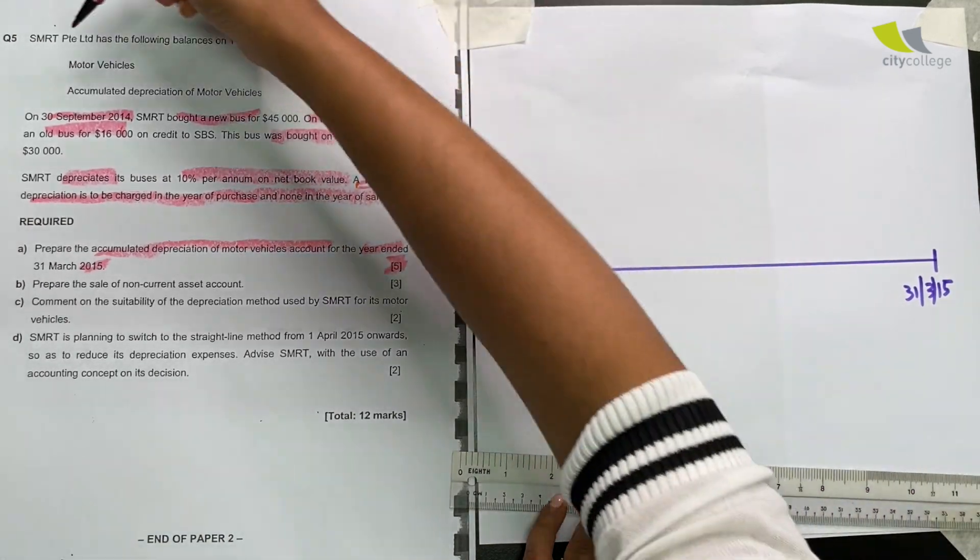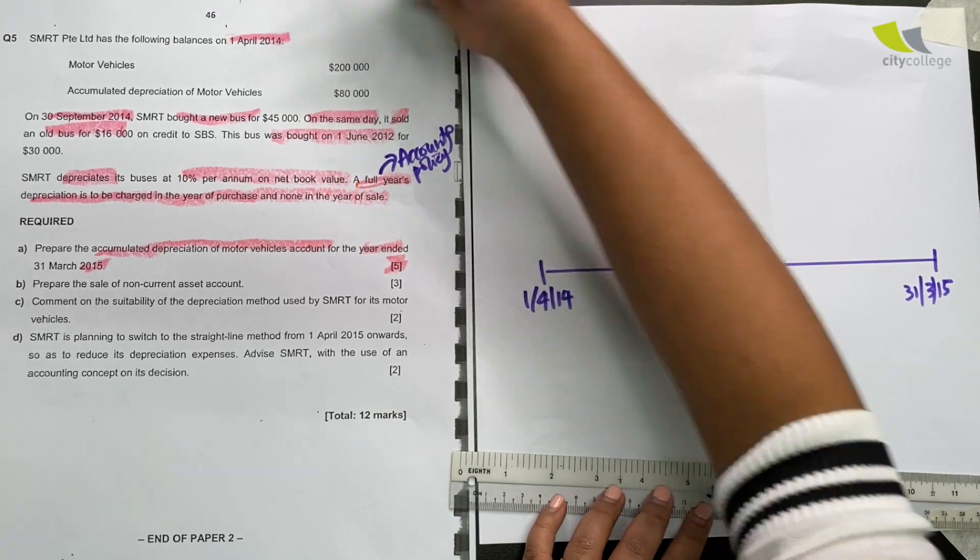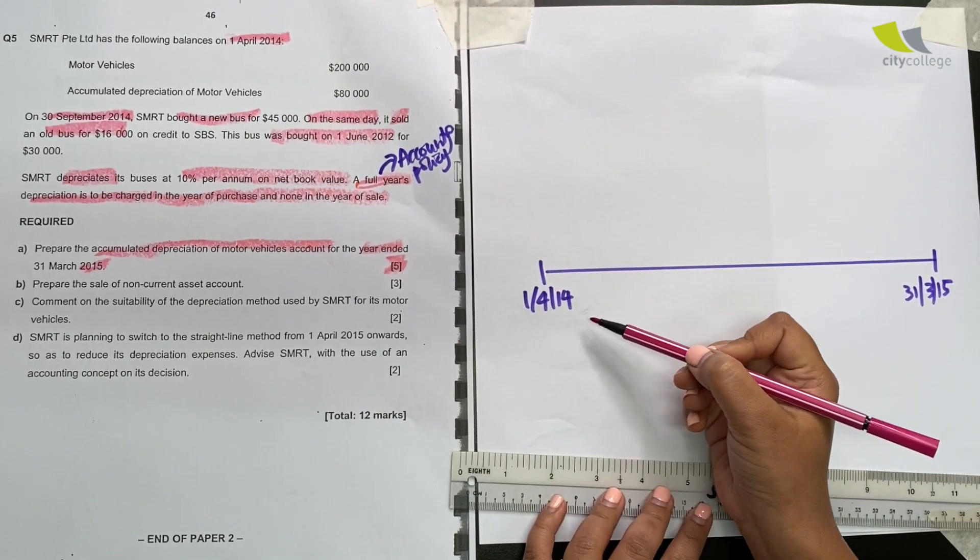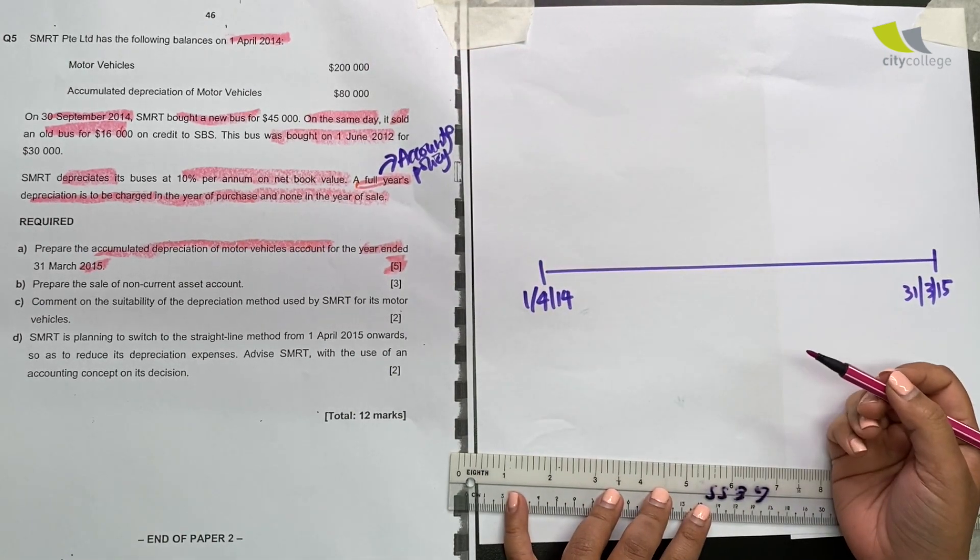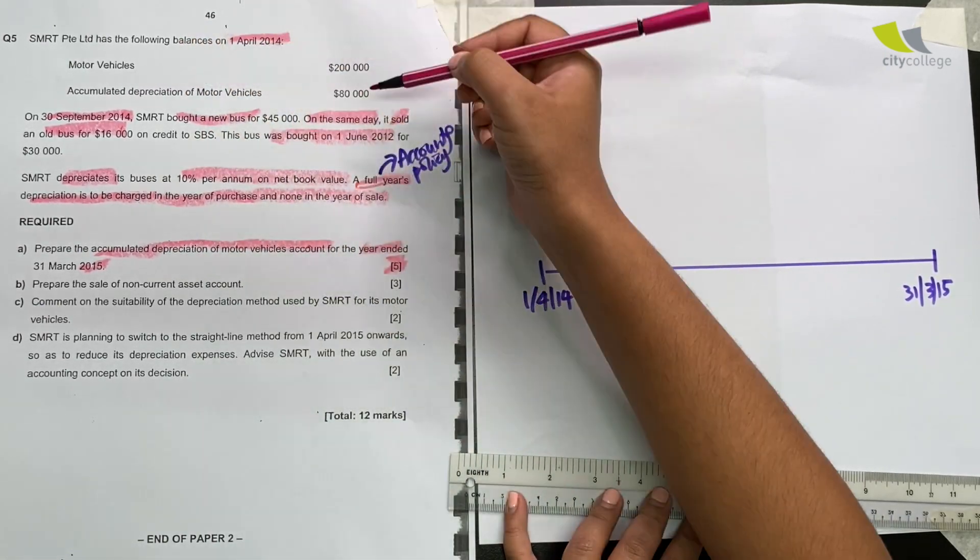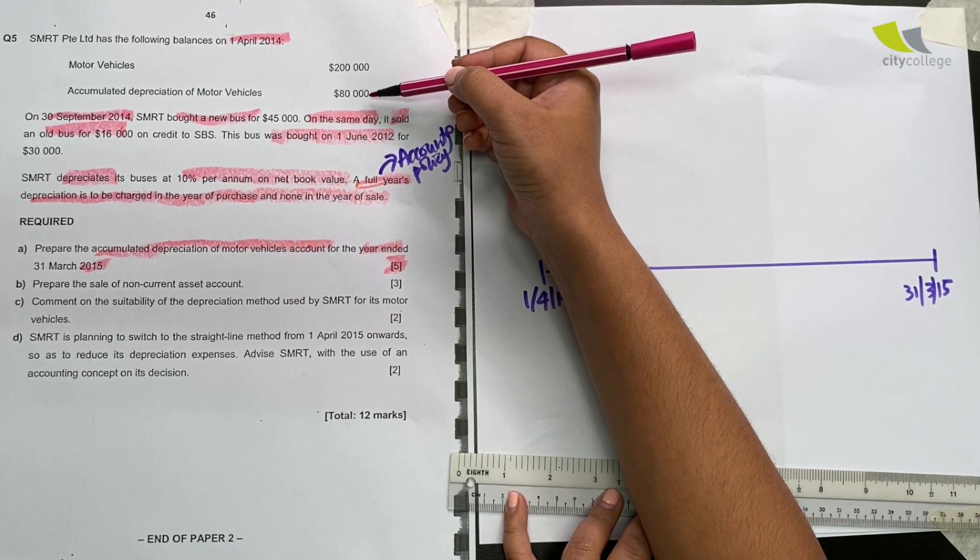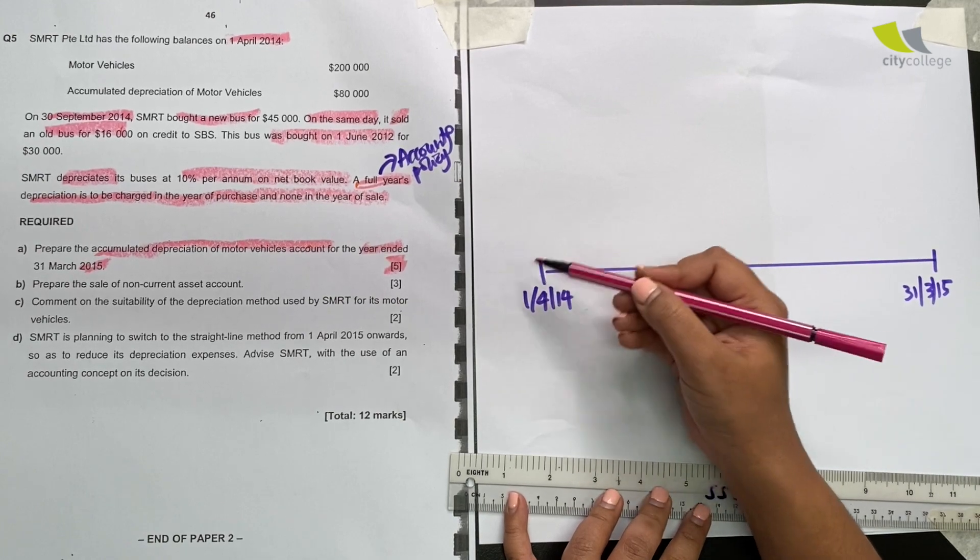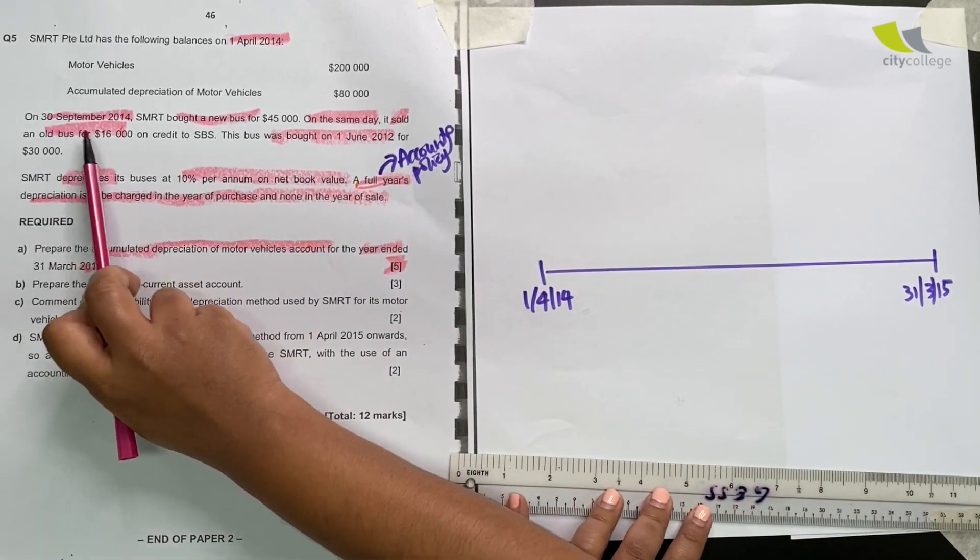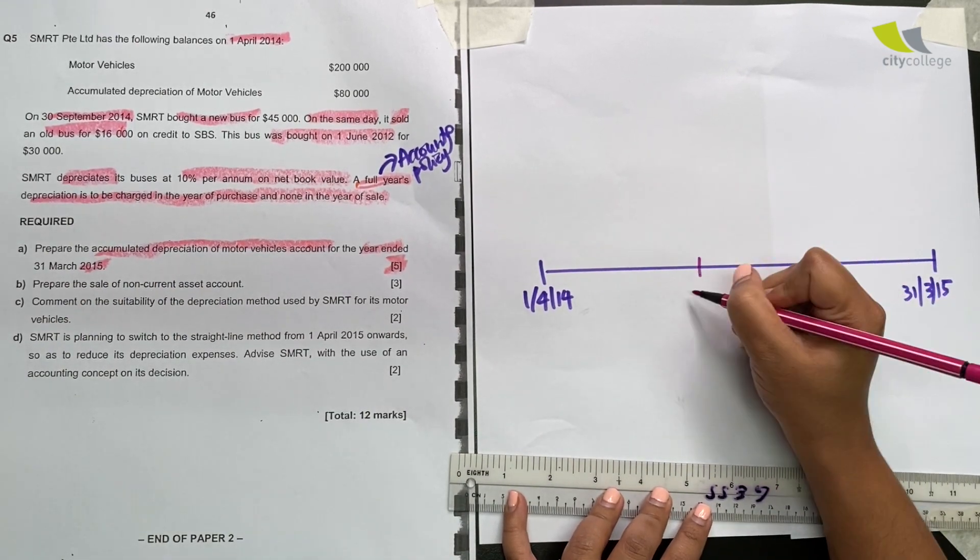The question says that the business has the following balances on 1st April 14. So this is 1st April 14. Motor vehicles, cost price is $200,000. And accumulated depreciation is already calculated for you at $80,000. So this is the period that they've given you the information. Let's move on. On 30th September. So where is 30th September? Somewhere here.